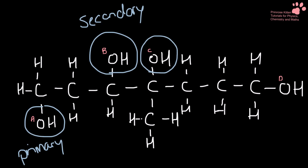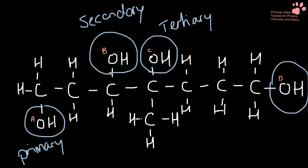This one here, C — looking at the carbon that it's attached to, there are no hydrogens attached there. So that makes this one a tertiary alcohol. And then D, over on the end here, the carbon that it's attached to has two other hydrogens attached to it, making it a primary alcohol.